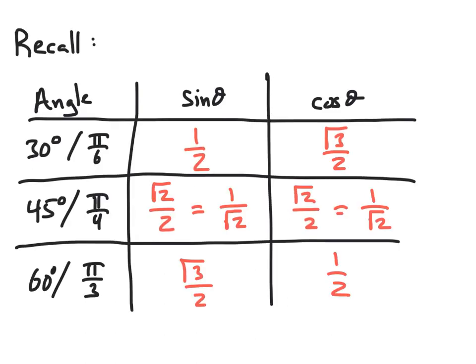We begin by recalling some facts discovered when discussing right triangle trigonometry. We used the special 30-60-90 and 45-45-90 triangles to find the sine and cosine values of angles measuring 30 degrees, 45 degrees, and 60 degrees, or pi over 6, pi over 4, and pi over 3 radians, respectively.